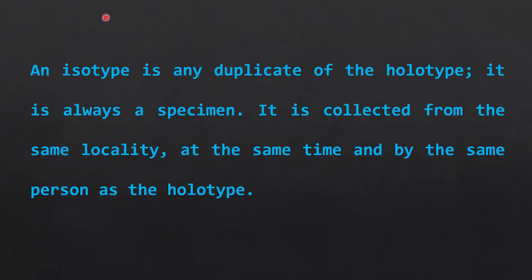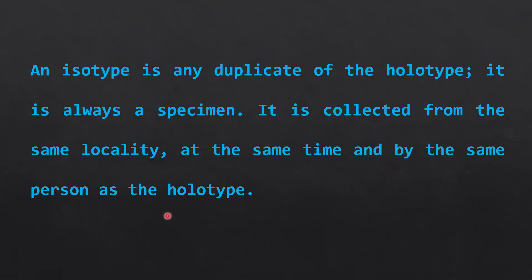Next, the isotype. An isotype is any duplicate of the holotype — essentially a copy of it. It is always a specimen collected from the same locality, at the same time, and by the same person as the holotype.